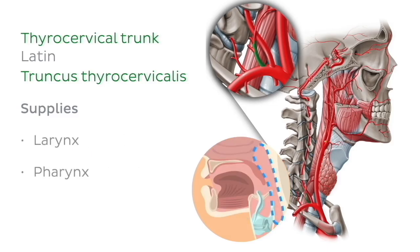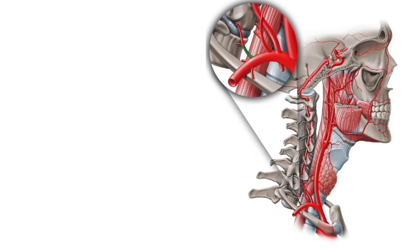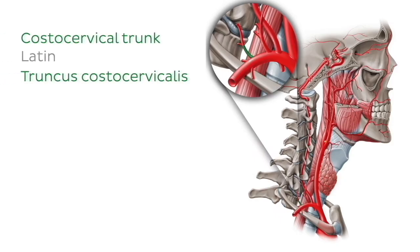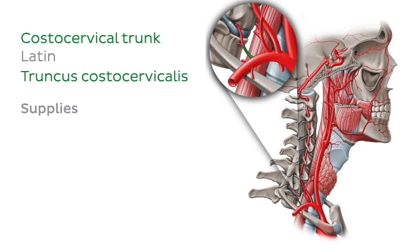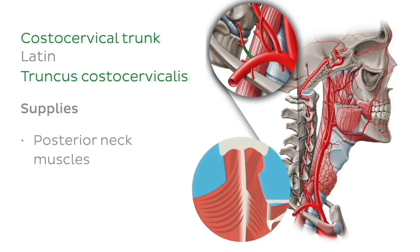The last branch on our list is the costocervical trunk. The costocervical trunk arches posteriorly towards the neck of the first rib. After this short course in the anterior neck, it divides into two terminal branches, through which it supplies structures in the root of the neck, including the posterior neck muscles as well as some in the thorax.